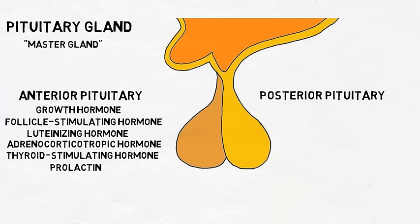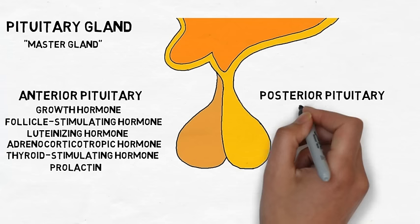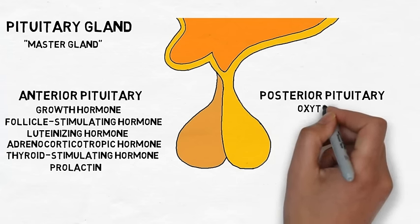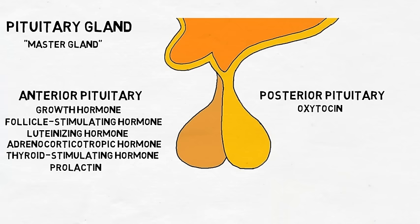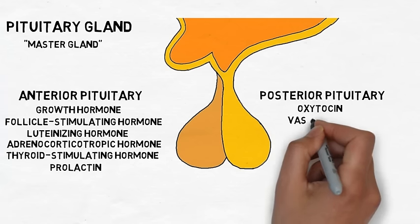The release of these hormones is controlled by the hypothalamus, which sends signals in the form of releasing hormones to tell the anterior pituitary when to secrete its hormones. The posterior pituitary also secretes two hormones, but does not synthesize them. Instead, they are synthesized by the hypothalamus and then sent to the posterior pituitary for release into the bloodstream. The names of these hormones are oxytocin and vasopressin.